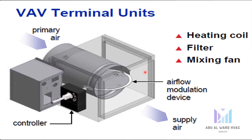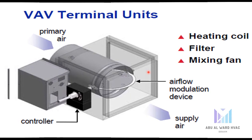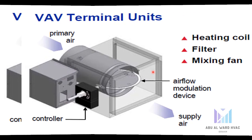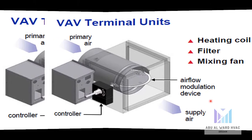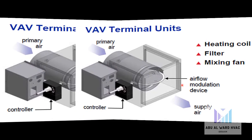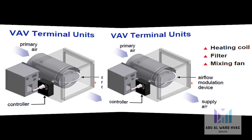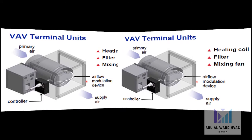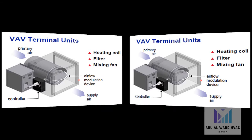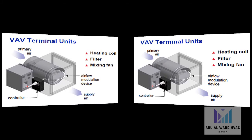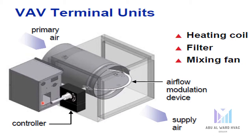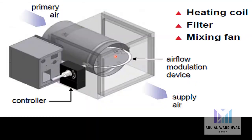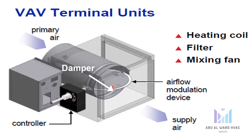A VAV terminal unit is a sheet metal assembly installed upstream of its respective space diffuser. The unit consists of an air modulating device, control hardware, and depending on the system application, possibly a heating coil, a filter, and a small terminal mixing fan. Modulating the airflow to each individual space is accomplished using a temperature-controlled mechanical device that varies the airflow resistance in the supply duct. The rotating blade damper changes airflow resistance by rotating the damper into the air stream, restricting the size of the air passage to that space.